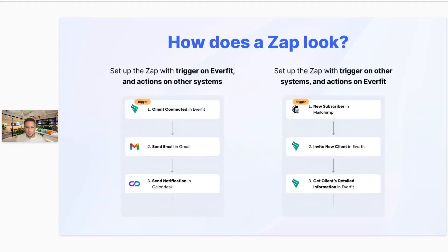Putting that into a real-life perspective, this is how a Zap looks. We have two different Zaps set up here. The first one has Everfit as the trigger. We have just added today the trigger, so when a client is connected in Everfit, you can produce actions through those external systems and also through Everfit's system too. For example, when a client is connected in Everfit, send them an email and then send a notification to yourself in Calendesk.